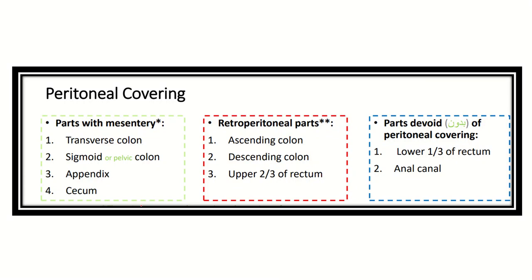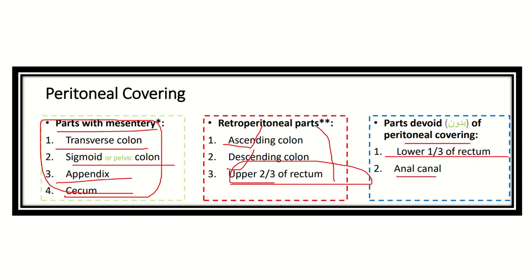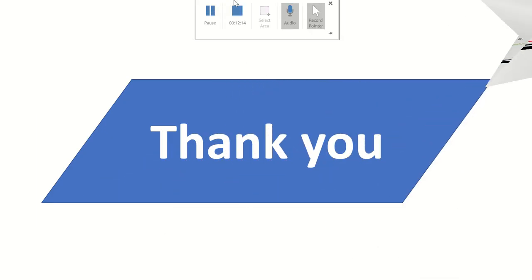Here, showing the peritoneal covering: the transverse colon, sigmoid colon, appendix, and cecum are covered by the peritoneum and have a mesentery. The retroperitoneal organs are the ascending colon, descending colon, and upper two-thirds of the rectum — these are relatively fixed. The lower one-third of the rectum and anal canal are devoid of peritoneal covering. So ascending and descending colon and upper two-thirds of the rectum are retroperitoneal — their anterior part has peritoneum but posteriorly there is none. This concludes the anatomy of the colon.